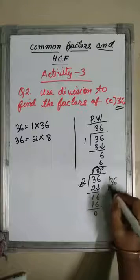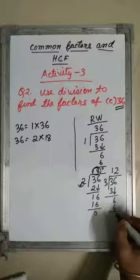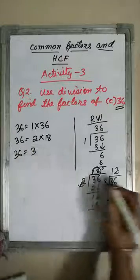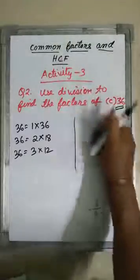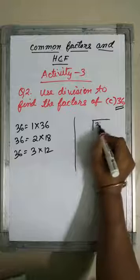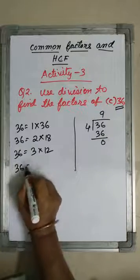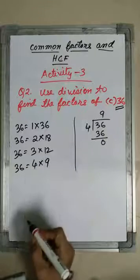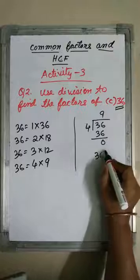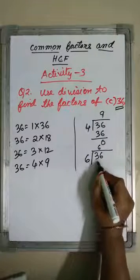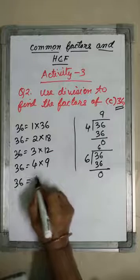36 divided by 3: 1 time, 1 into 3 is 3, bring down 6, 2 times, 2 into 3 is 6 — remainder 0. So, 36 equals 3 into 12. I don't have space, so I am erasing it. 36 divided by 4: 9 times, remainder 0. So, 36 equals 4 into 9. Then, 36 divided by 6: 6 into 6 is 36 — remainder 0. So, 36 equals 6 into 6.